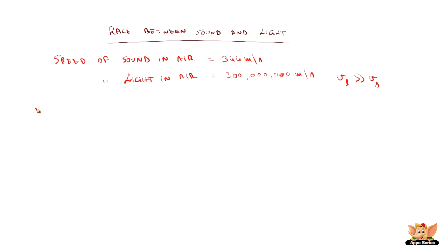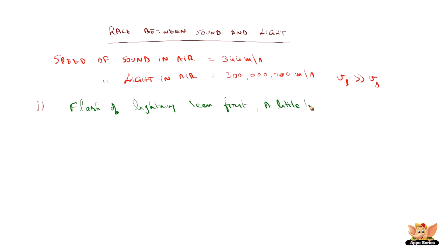Let's see some examples to understand it better. On a rainy day, we see lightning happening — we see the lightning first, and then a little later we hear the sound of thunder. But both are coming from the same clouds. The source is the same, but light reaches us faster than sound because the speed of light is much higher than the speed of sound. So the flash of lightning is seen first, and a little later the sound of thunder is heard.